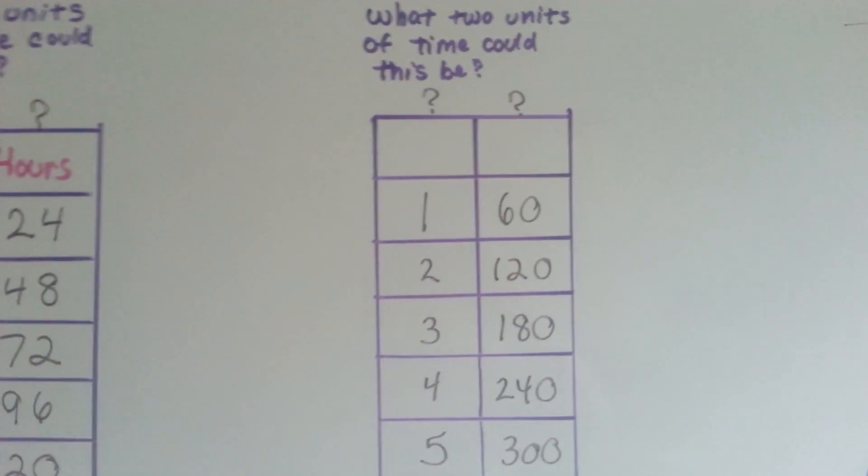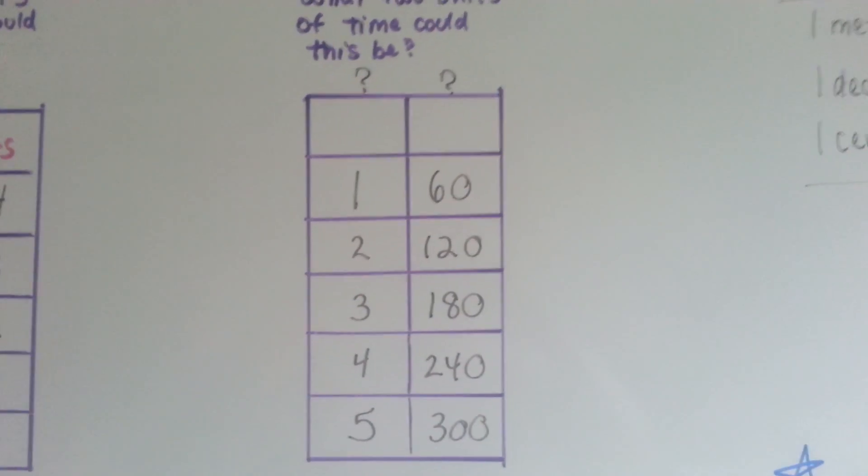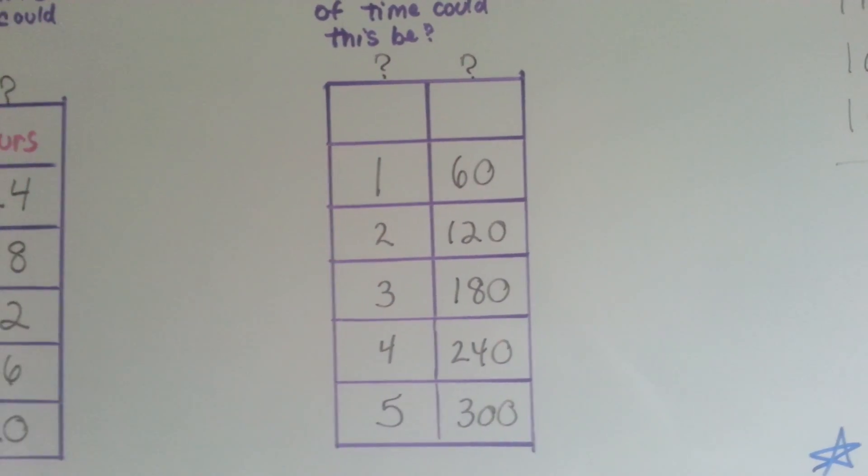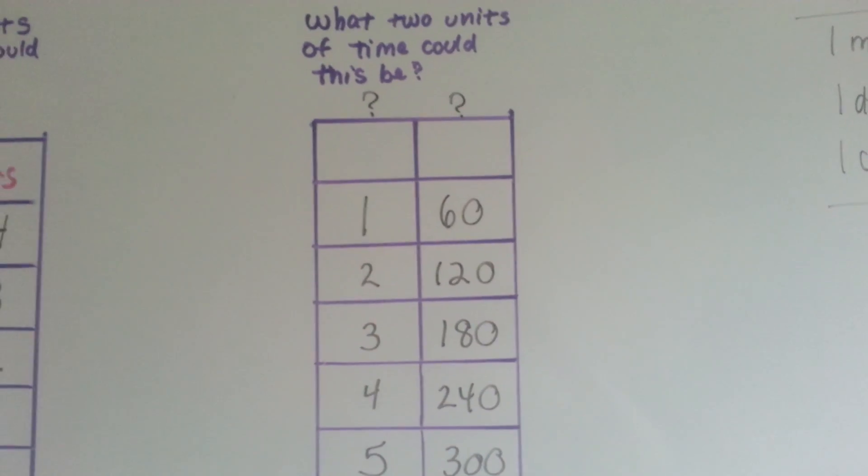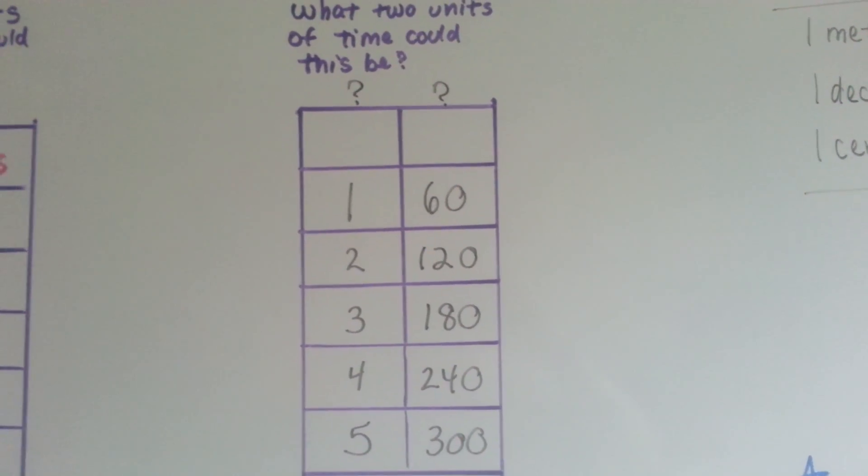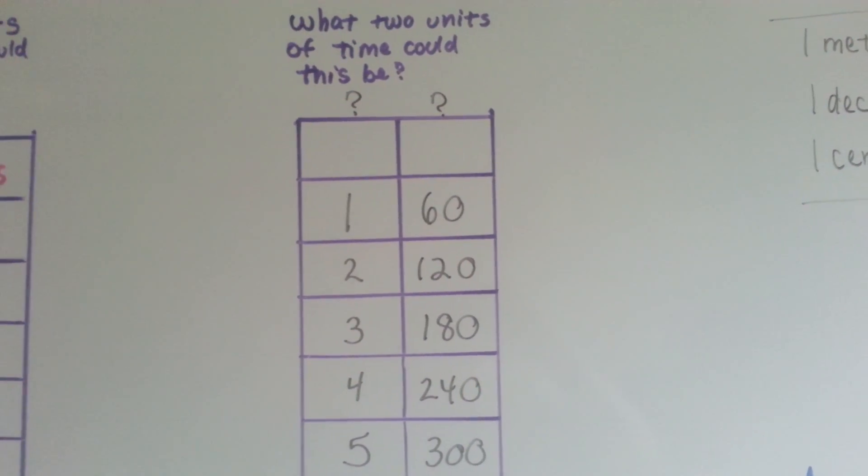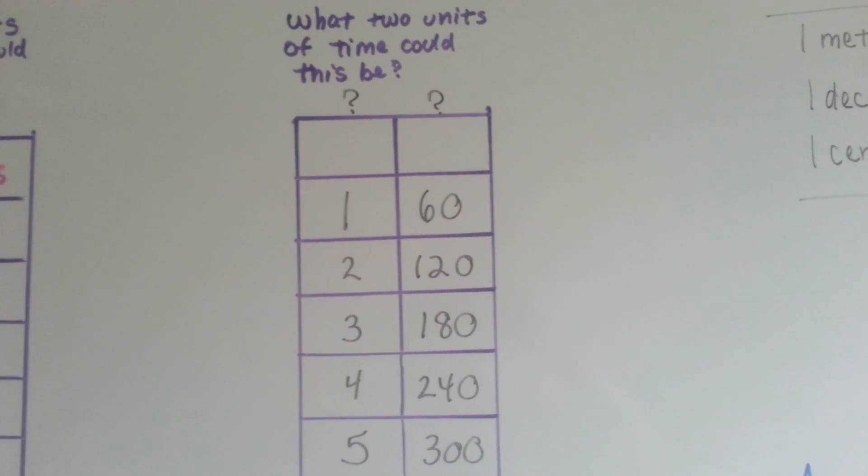Can you think of what two units of time this could be? One is 60. Two of them would be 120. What two units of time would fit into here? Can you think of something? Actually, there's two of them.